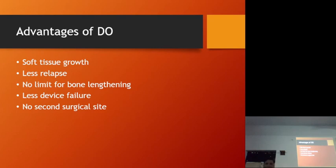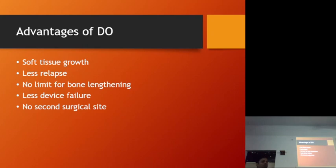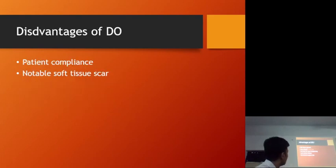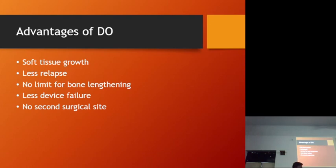Advantages of distraction osteogenesis: soft tissue growth occurs along with bone growth through a process called mechanotransduction. Relapse is less — except in growing patients. There is no limit for bone lengthening; we are limited only by the size of the distractor. If we have a longer distractor device, we can get longer bone.